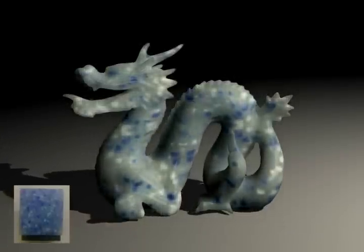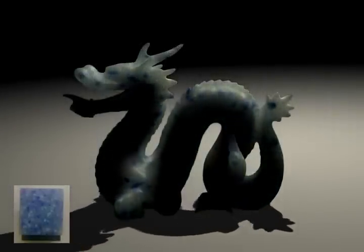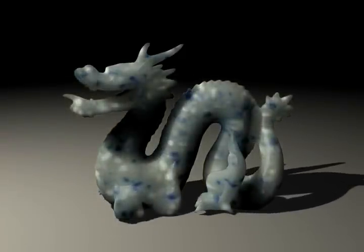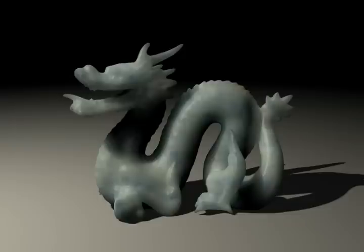In this example, the dragon is rendered with stone material. With SubEdit, the heterogeneity of the measured stone material is easily enhanced or reduced and generates convincing subsurface scattering effects.